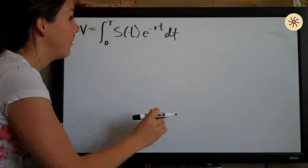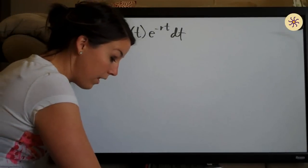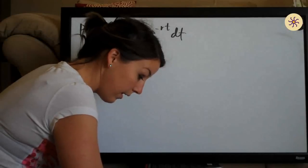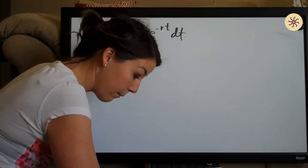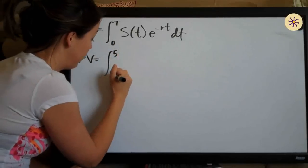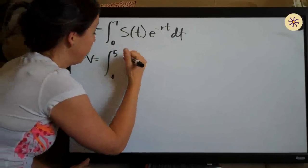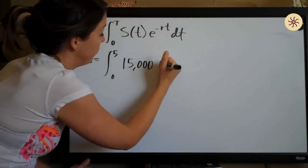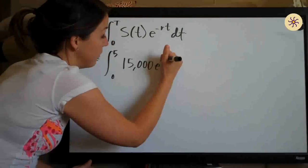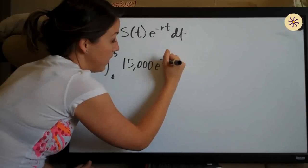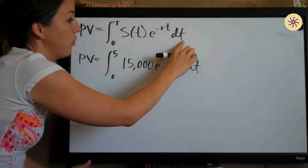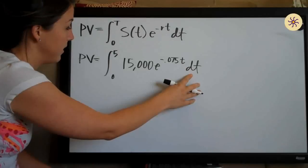We're just going to be using this formula, so let's go ahead and start plugging in values and then all we need to do is simplify and solve. Present value — because it asks us to find the present value. We're depositing money for five years, so we plug in five for capital T. We're depositing $15,000 per year, so $15,000 is our income stream. We leave E alone. Our rate is 7.5% interest, so we have a negative sign that comes with this formula: negative 0.075. We leave lowercase t alone because we have dt, so t is the variable we're integrating.